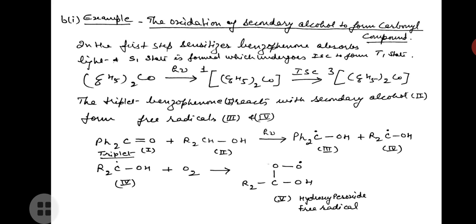The example for B-first mode is the oxidation of secondary alcohol to form a carbonyl compound. In the first step, sensitizer benzophenone absorbs light and the S1 state is formed, which undergoes ISC — intersystem crossing — to form the triplet state. Benzophenone in the ground state on irradiation forms the excited singlet state, which undergoes ISC to form the triplet excited state of benzophenone.